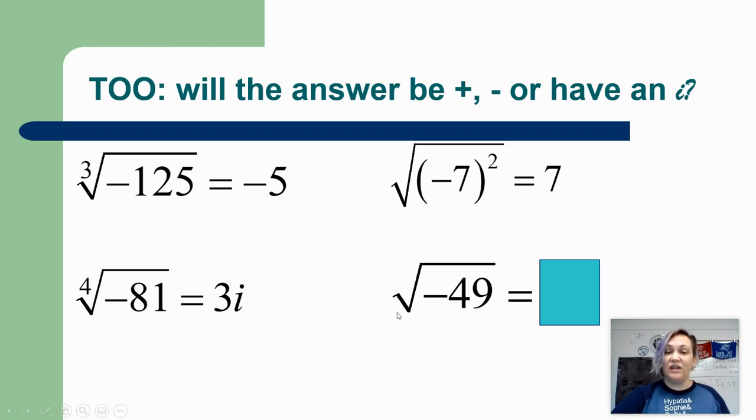Now this is a square root. It doesn't have an index, but there is an invisible index of 2. You can even write it in there if you want to. So this is a square root of negative 49. Since my index is even, and I have a negative underneath, this one will be imaginary. So 7i.